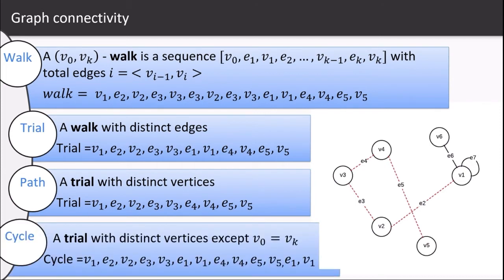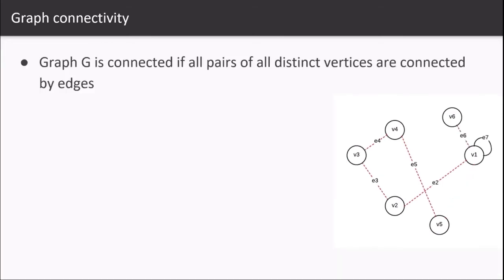A cycle is a trial with distinct vertices except the first and the last, which then makes up a loop. We will combine the first vertex v1 with the last vertex v5. Now it is easy to understand about the graph connectivity.